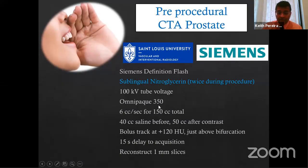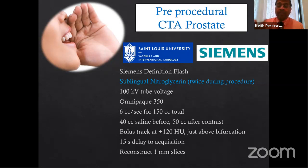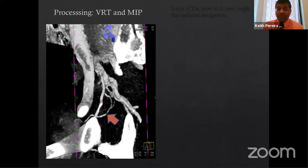We developed a CTA protocol with a grant from Siemens. A key addition is sublingual nitroglycerin 0.4 mg twice, five minutes apart, before scanning — this has dramatically improved visualization of the prostatic arteries. With this protocol we can now consistently see the prostatic arteries. We do volume-rendered reconstruction and MIP images to identify the origin of the prostatic artery. This is important for knowing where to go before you even start the procedure.